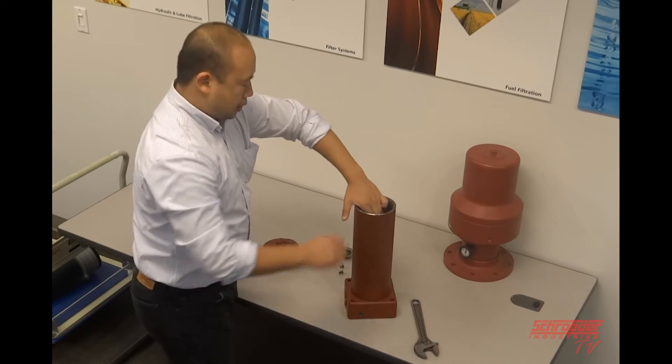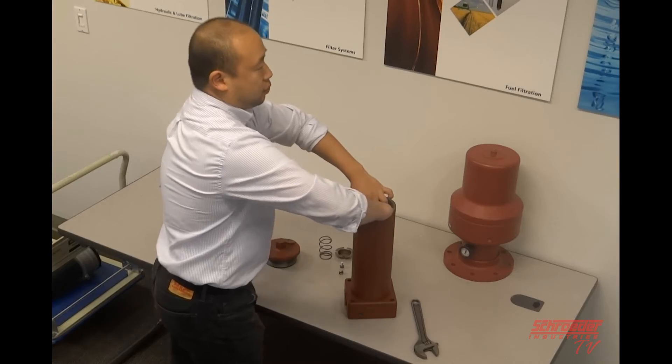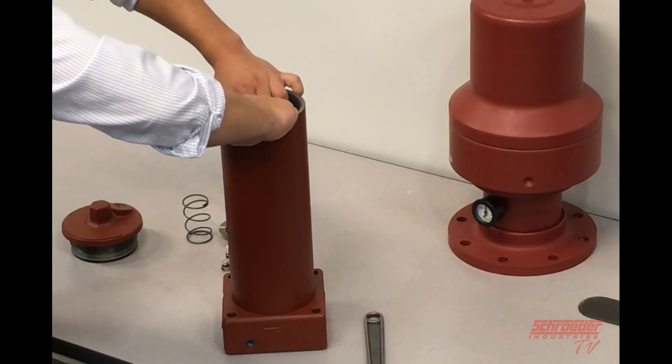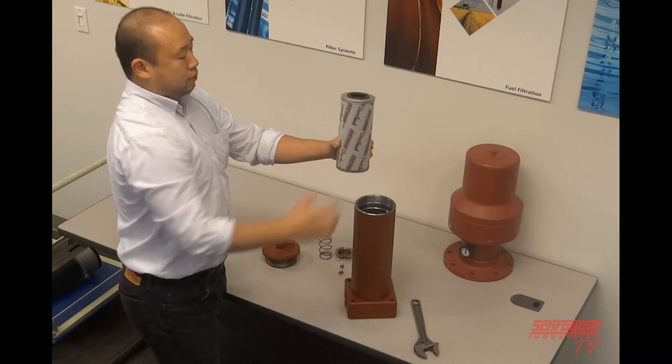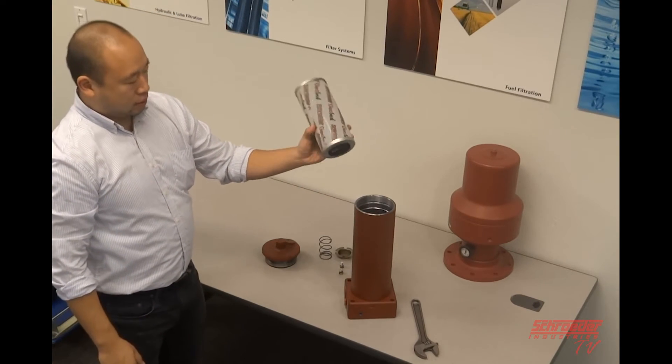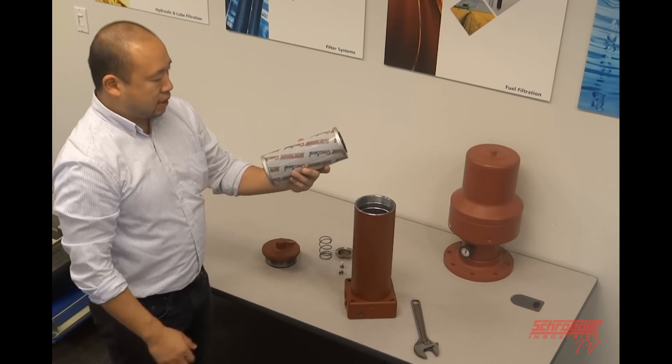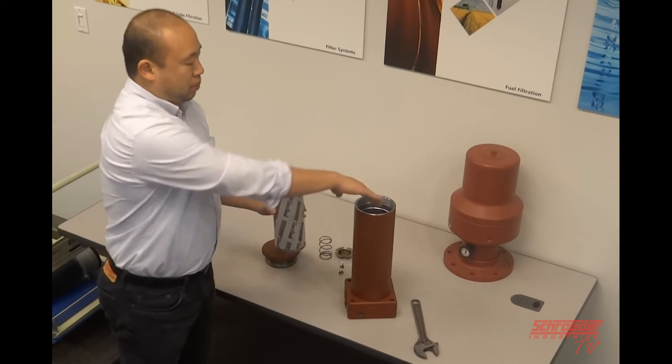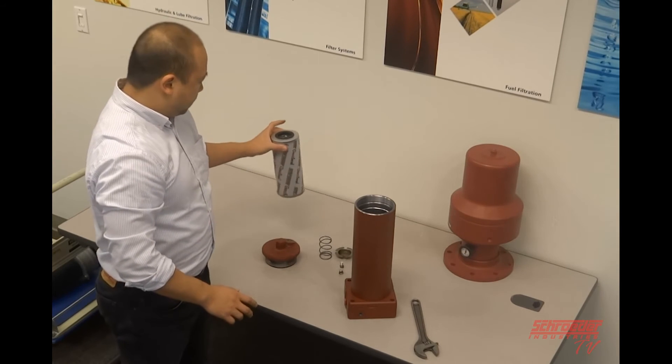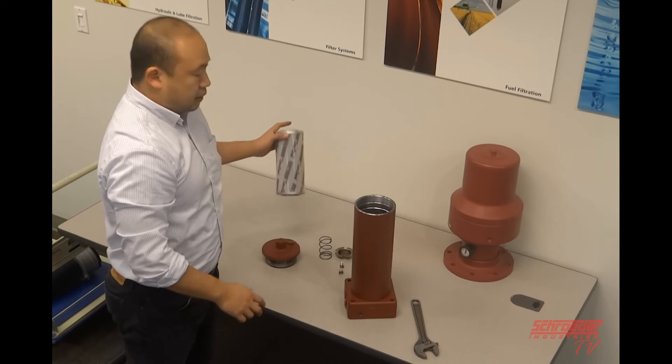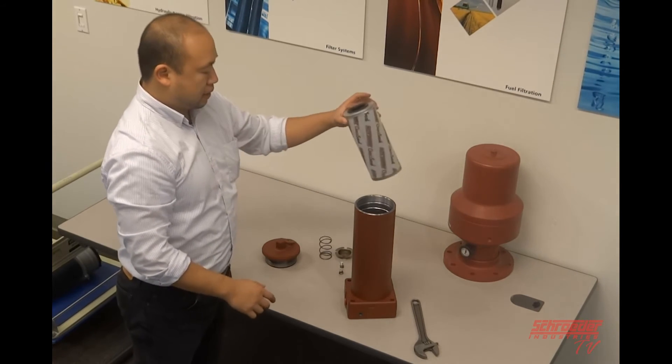And with the GLC element, you don't have to use any twisting motion. You can just put your fingers in there and pull it out. And this will be the element you will be changing. So you can just take a clean rag, clean that off, wipe off any excess fluid over here, and take out a clean element and put that back in.